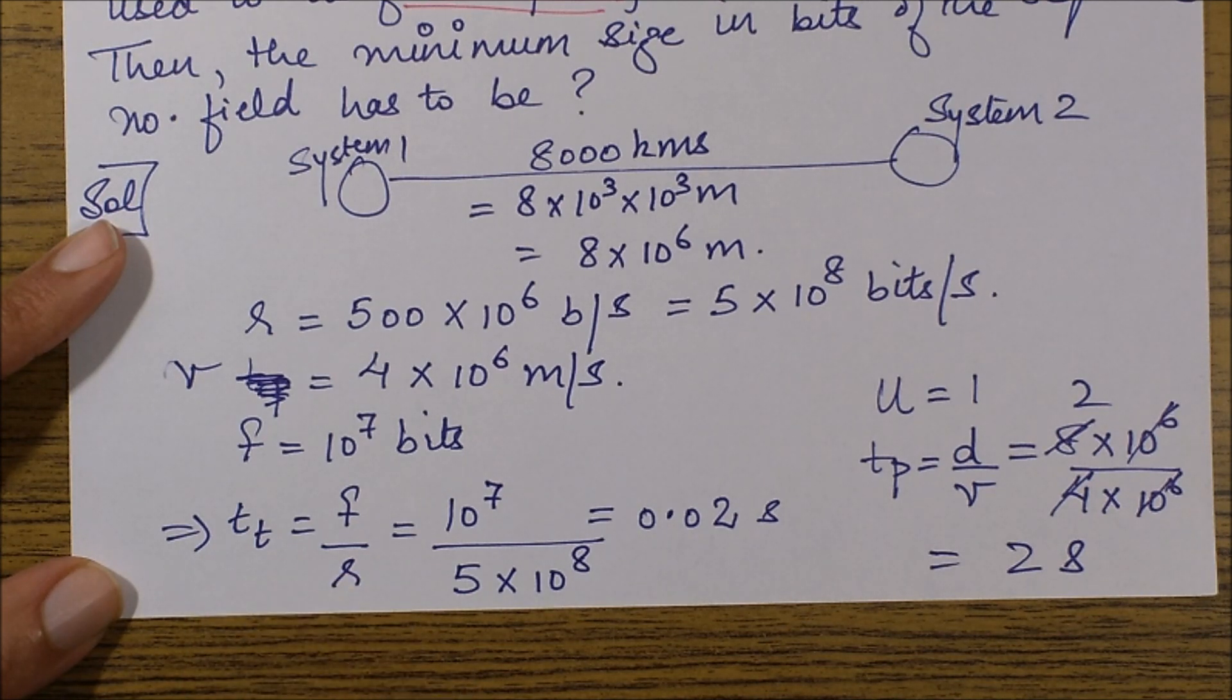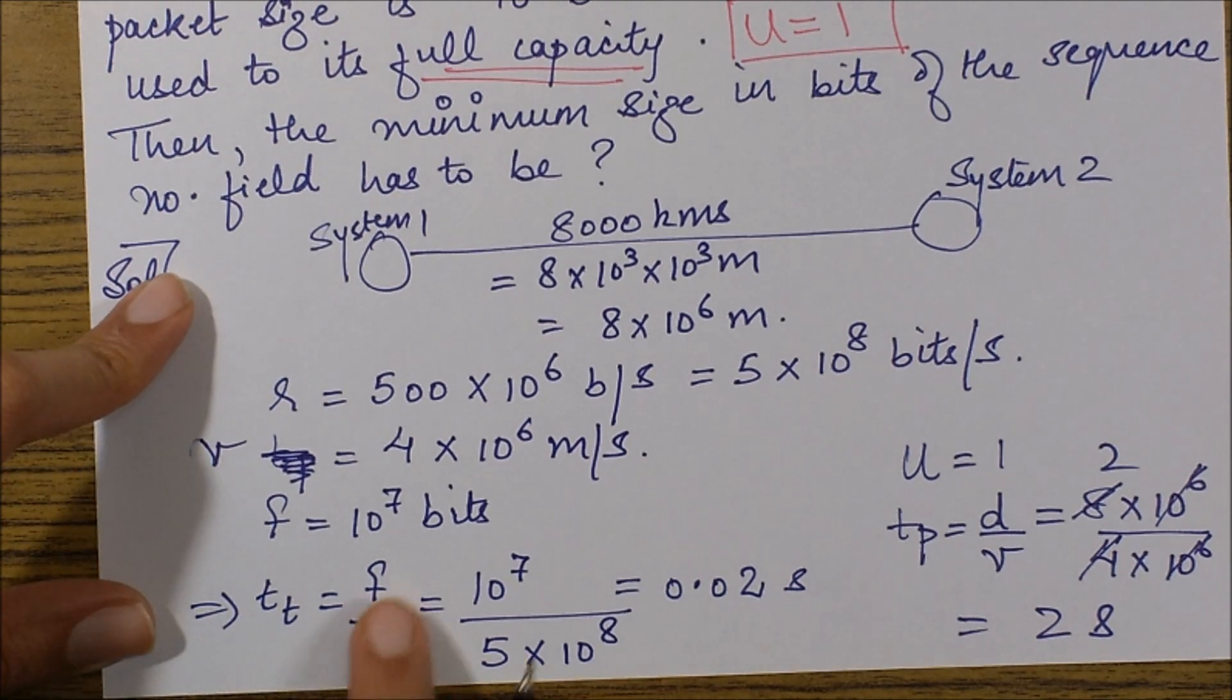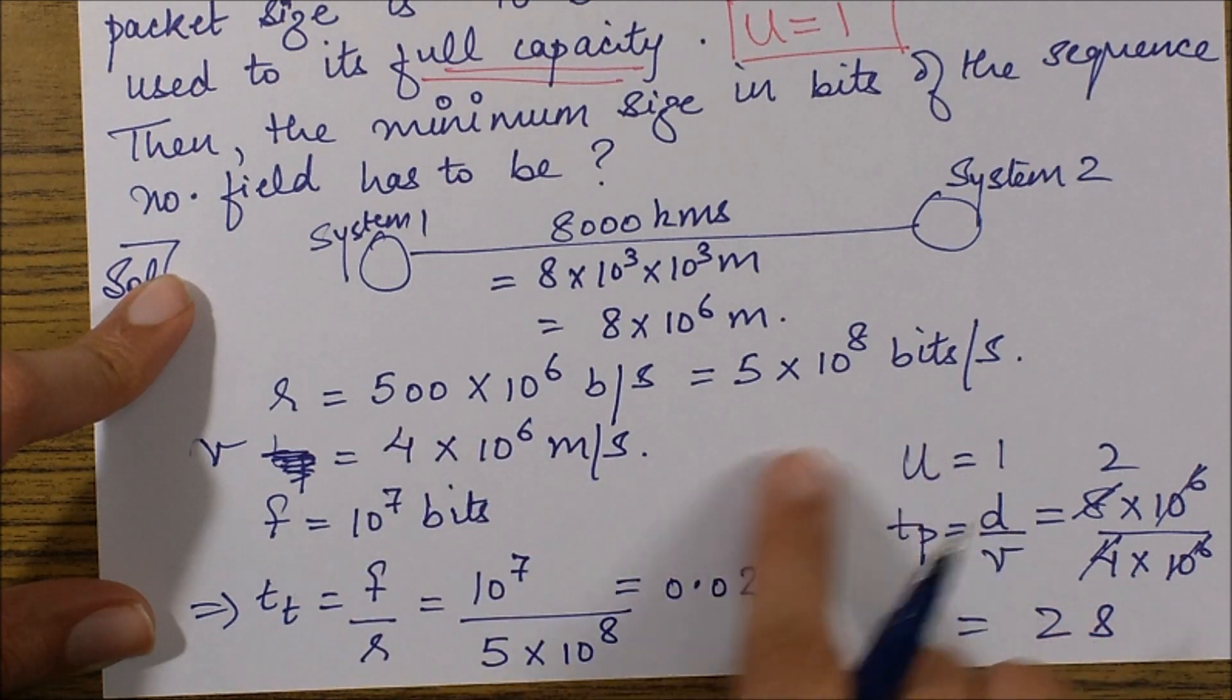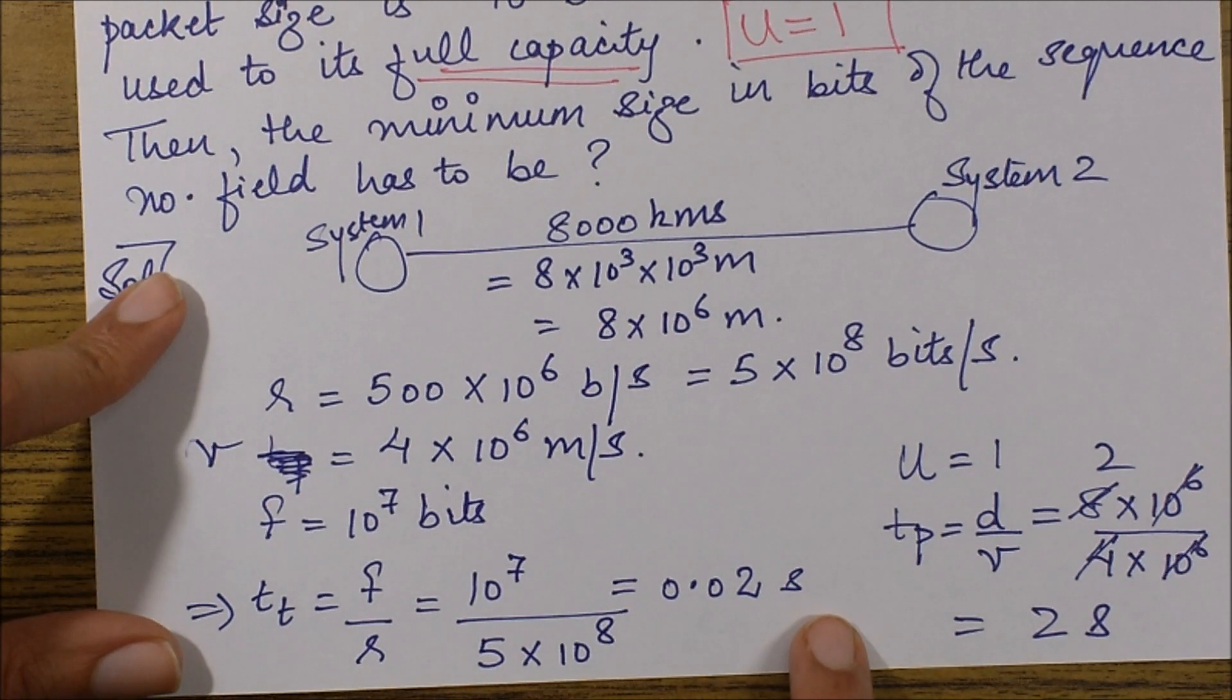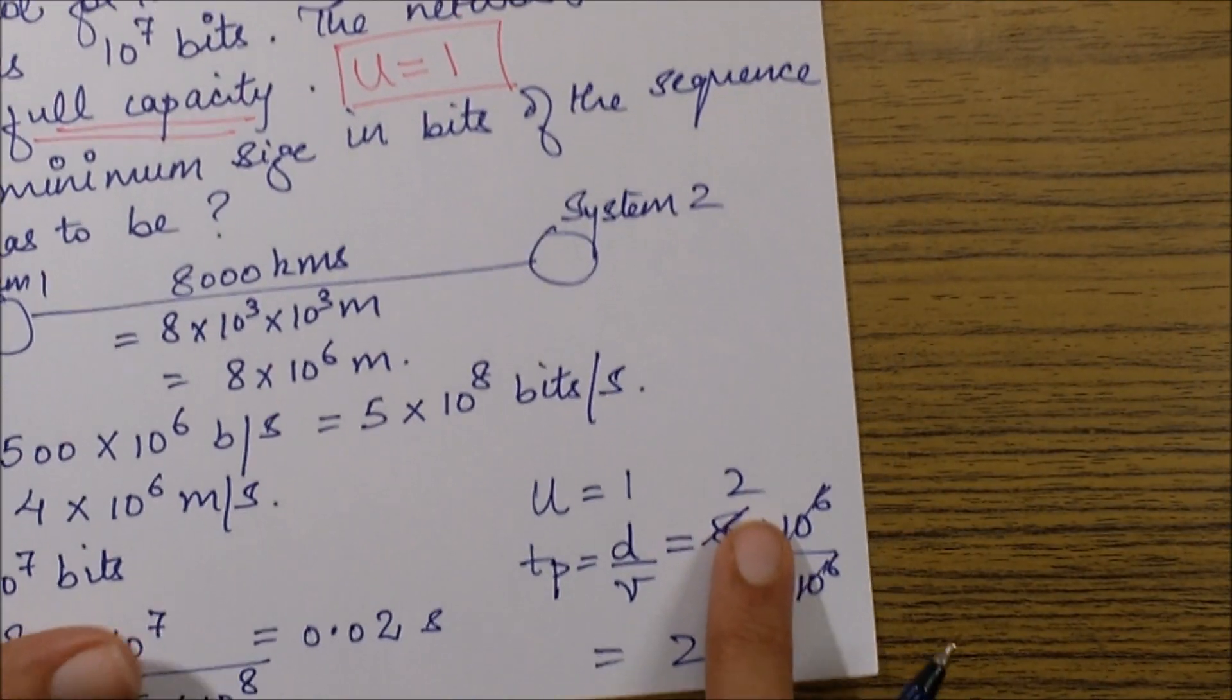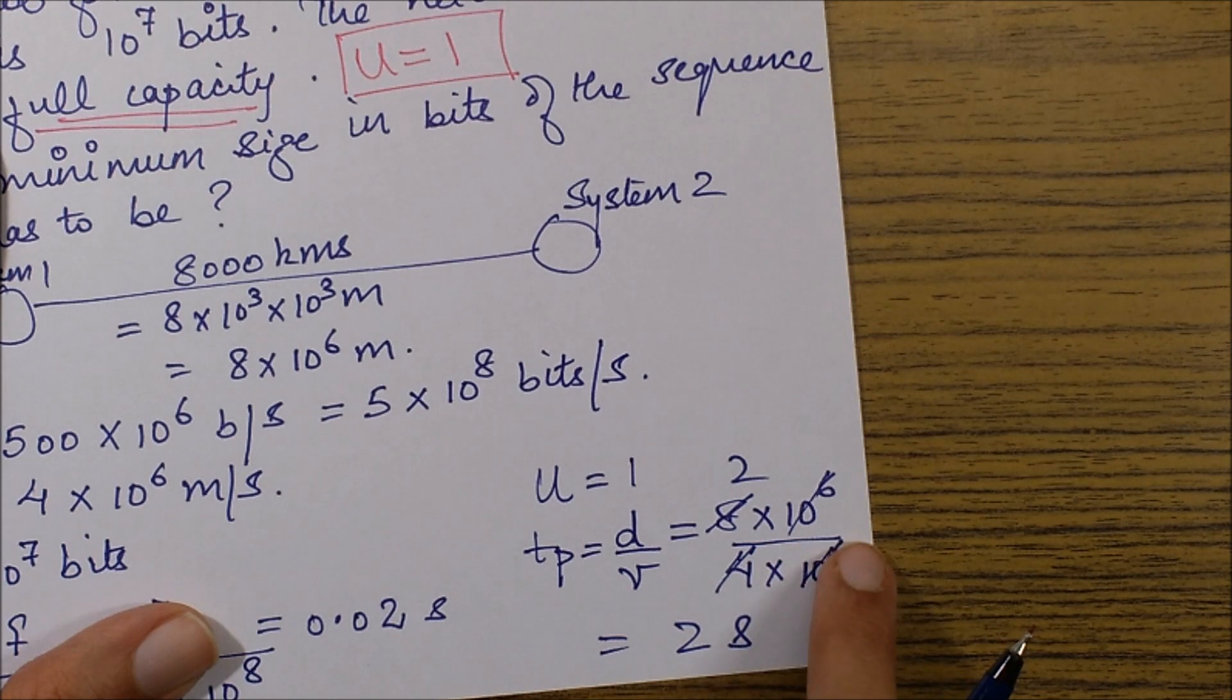When we find tt from here, we get it as f by R, which is 10^7 upon 5 × 10^8, so it simplifies to 0.02 seconds. Also, since we had the distance and the speed or velocity, we can easily find the propagation time, which comes out to be d / v, which is 8 × 10^6 upon 4 × 10^6, so it is 2 seconds.